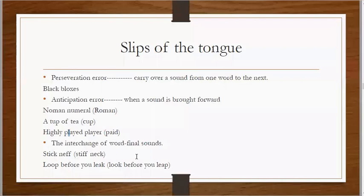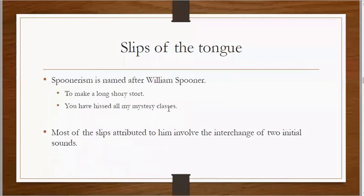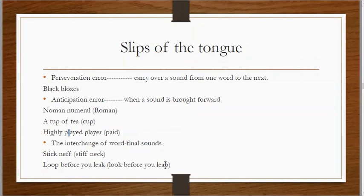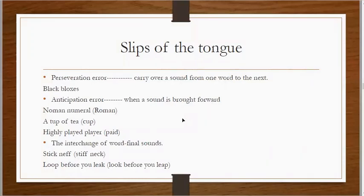Sometimes we can also have interchange of final sounds. For example, instead of 'stiff neck' we produce 'stick neph.' Unlike the previous examples where we were exchanging beginning sounds, we can also exchange final sounds. Similarly, 'loop before you leak' — this should be 'look before you leave,' so the final sounds have been exchanged. All these are examples of slip of the tongue phenomena.